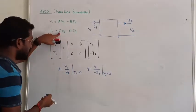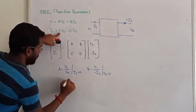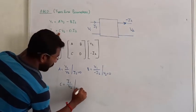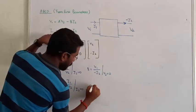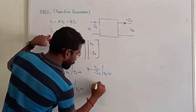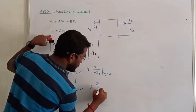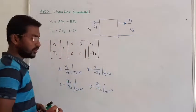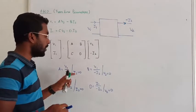Similarly, calculate the value of C. So C is the value, that is I1 upon V2, various value of I2 is going to be 0. Similarly, the value of D becomes I1 upon minus I2, various value of V2 is going to be 0. So that is how we are calculating the value of A, B, C, D.